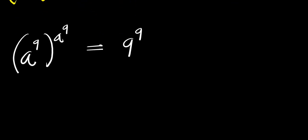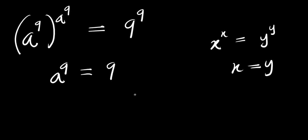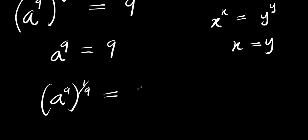Now, considering this identity: if x^x = y^y, then x equals y. So I can say that a^9 equals 9. From here I can solve for a by raising both sides to the power of 1 over 9.